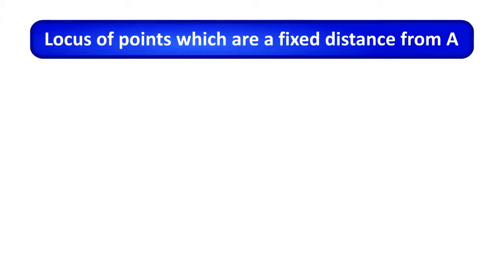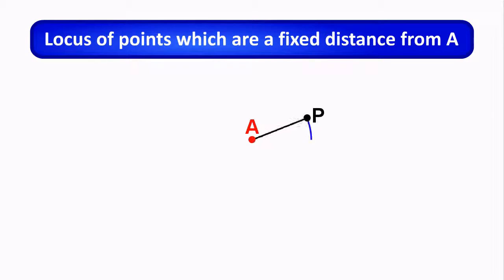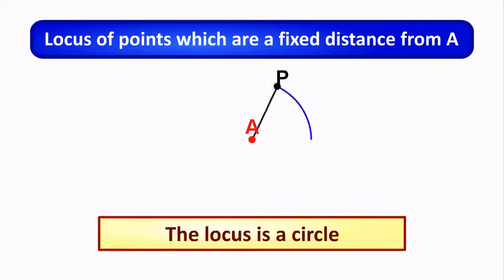The locus of points which are a fixed distance from a point A forms a circle.